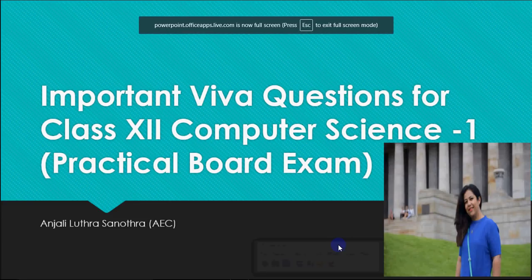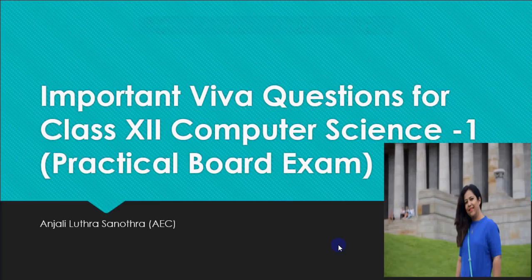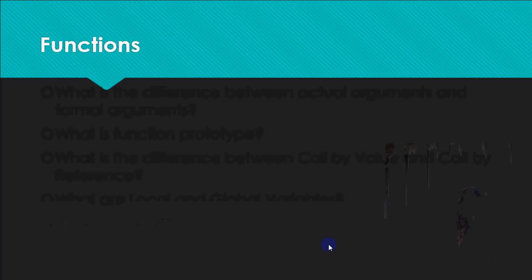Hey, this is Anjali and in this video I'm going to explain some important questions for your final board practical for computer science. VIVA is one of the things which you have to prepare for your final practical exam. Your final practical exam is divided into different categories — marks are divided into your report file, project file, implementation of programs in the lab, and the VIVA. VIVA is important because it is where you face the external examiner and they assess your knowledge level. The most important questions are from OOPS topics because C++ is the major part of your syllabus.